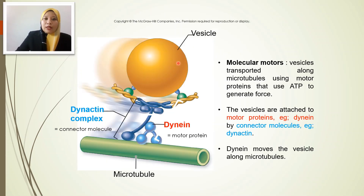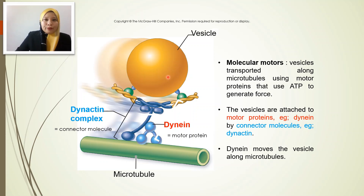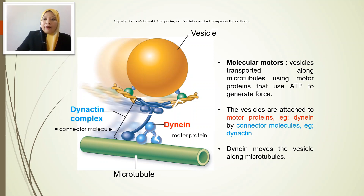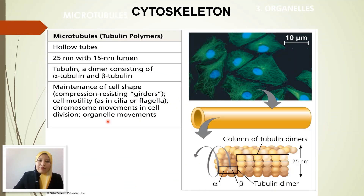For example, a transport vesicle: in order to move that vesicle or help in the movement of vesicles, molecular motors carry the vesicle along the microtubules. In simple terms, microtubules provide a pathway that helps in the movement of vesicles along with the motor proteins — which we can also call kinesin.